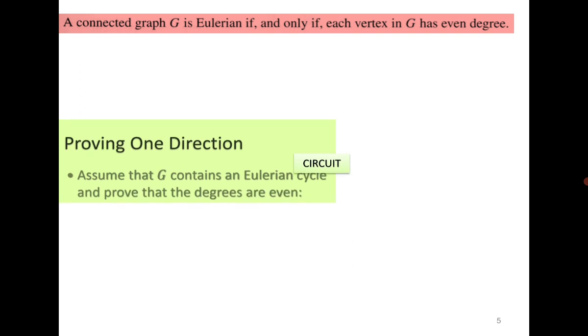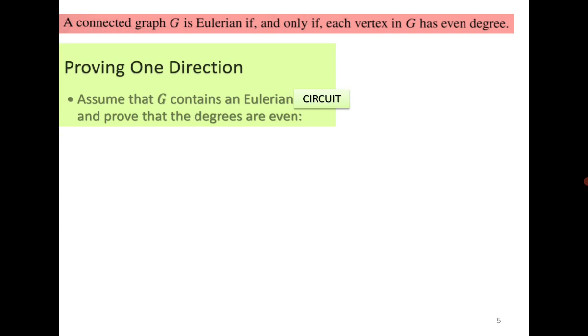Let us try to discuss the proof of the following theorem. First part is quite easy to follow. It says that if G has an Eulerian circuit, which means G is Eulerian, then we need to prove that the degrees are even. Please do think by yourself why it is happening.